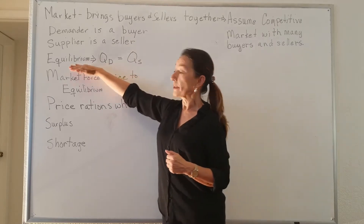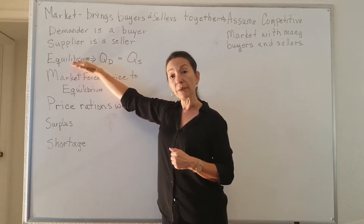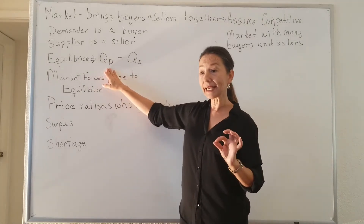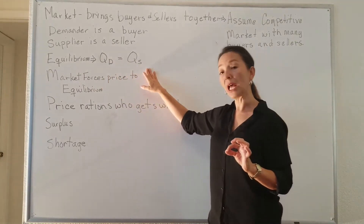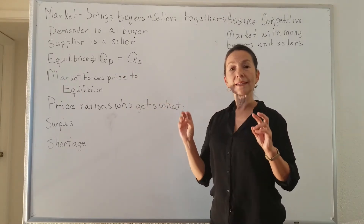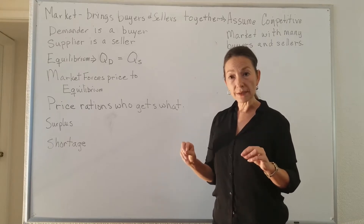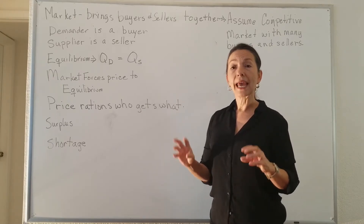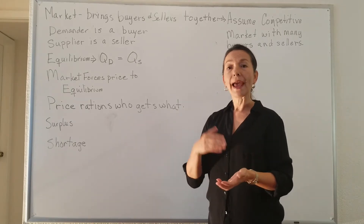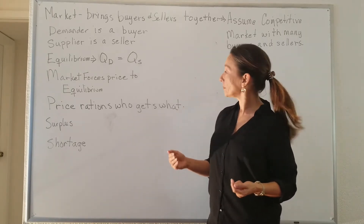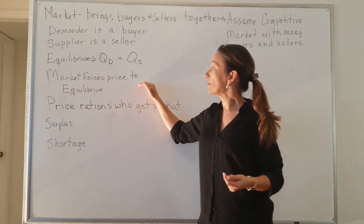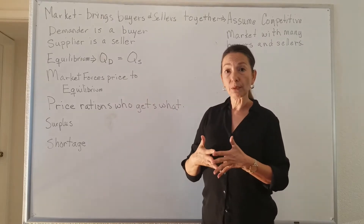We're going to talk about something called equilibrium. Equilibrium is where the quantity demanded is exactly equal to the quantity supplied. This is important because equilibrium helps us find the market price, or the equilibrium price, and the equilibrium quantity — how much should be put into the market and at what price it will sell. We're also going to talk about how market forces push the price towards equilibrium.